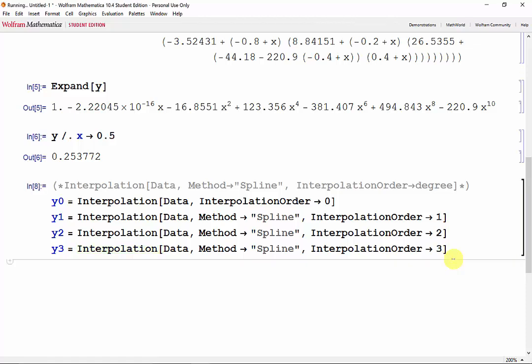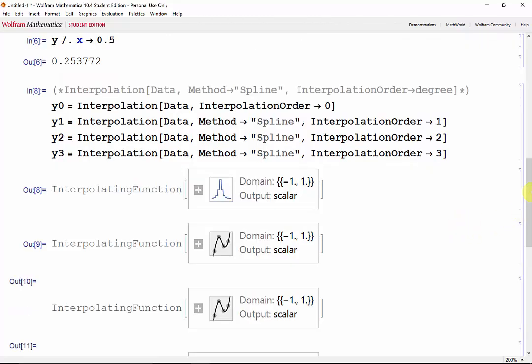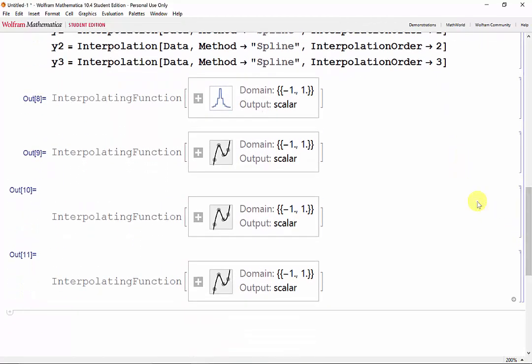Now shift enter, and as we can see, the interpolation function doesn't actually give us a polynomial as an output, because it creates a piecewise function. This also means that we can't use a rule to evaluate the functions.